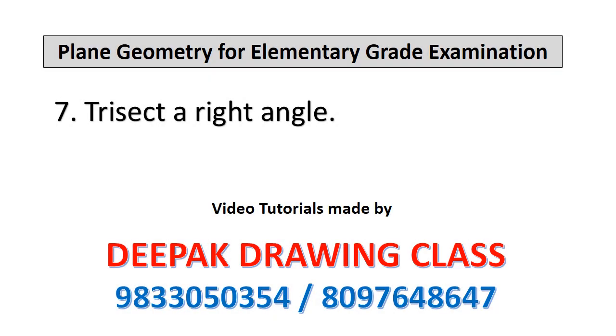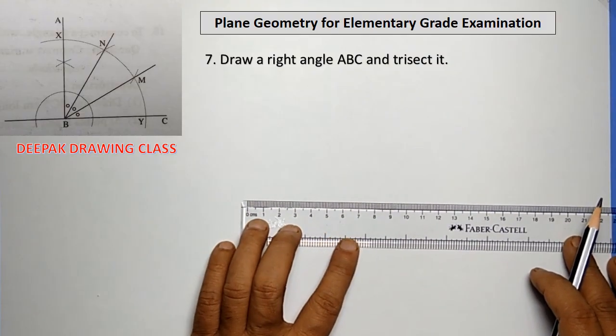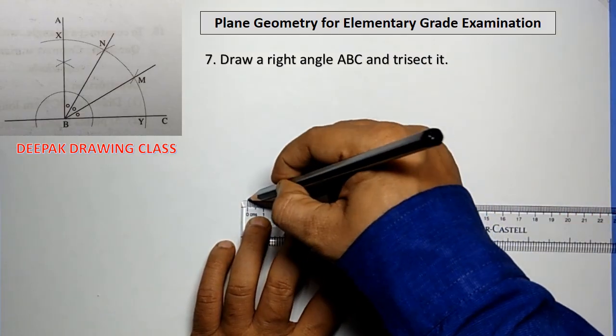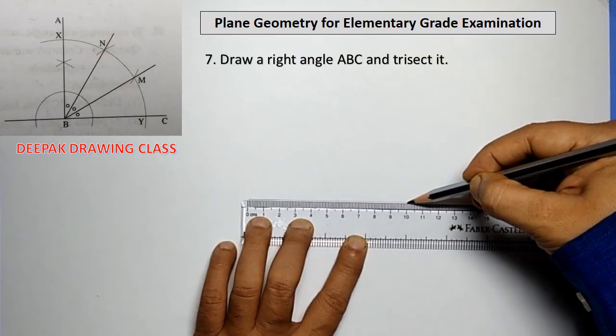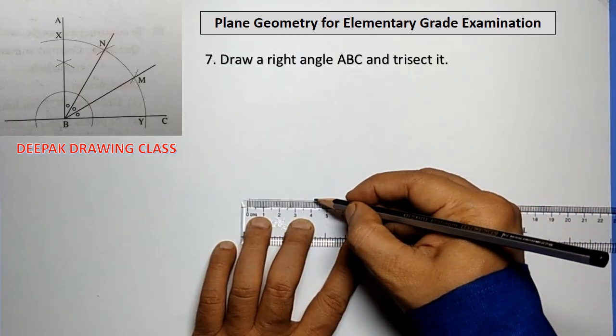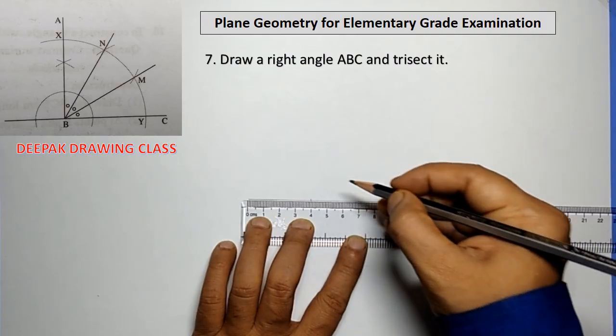Hello friends, welcome to the Deepak Drawing Class. Today we will learn some basic constructions of plane geometry for elementary grade examination. Our seventh construction is how to trisect a right angle.